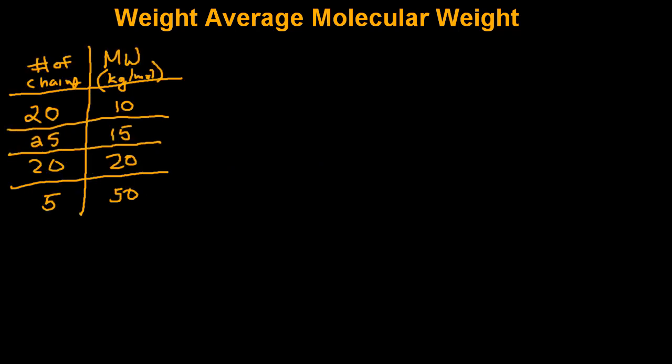Now here in this table we're given a theoretical distribution of a polymer sample. So using both equations we'll determine what the weight average molecular weight is. So let's first use the first definition, where the weight average molecular weight is equal to the sum of weight fraction times the respective molecular weight for certain chains.